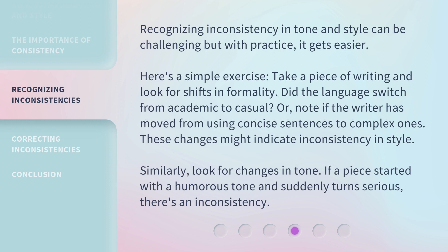Recognizing inconsistency in tone and style can be challenging, but with practice it gets easier. Here's a simple exercise: take a piece of writing and look for shifts in formality. Did the language switch from academic to casual? Or note if the writer has moved from using concise sentences to complex ones. These changes might indicate inconsistency in style.